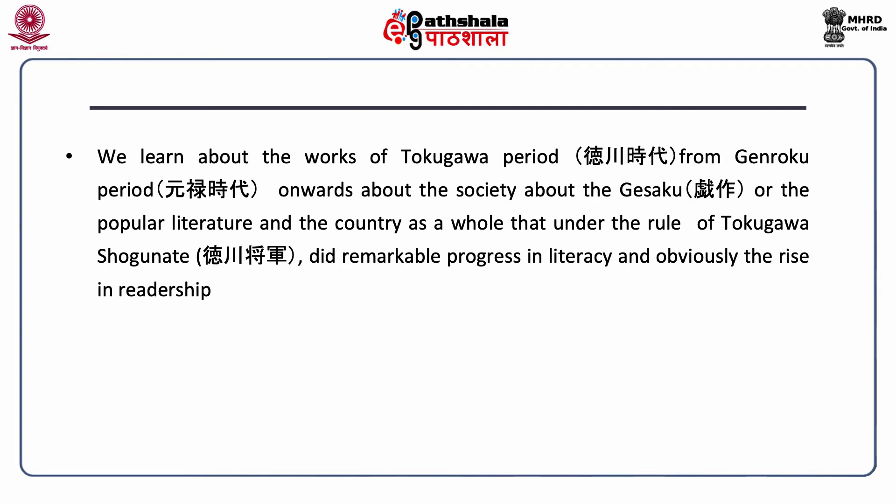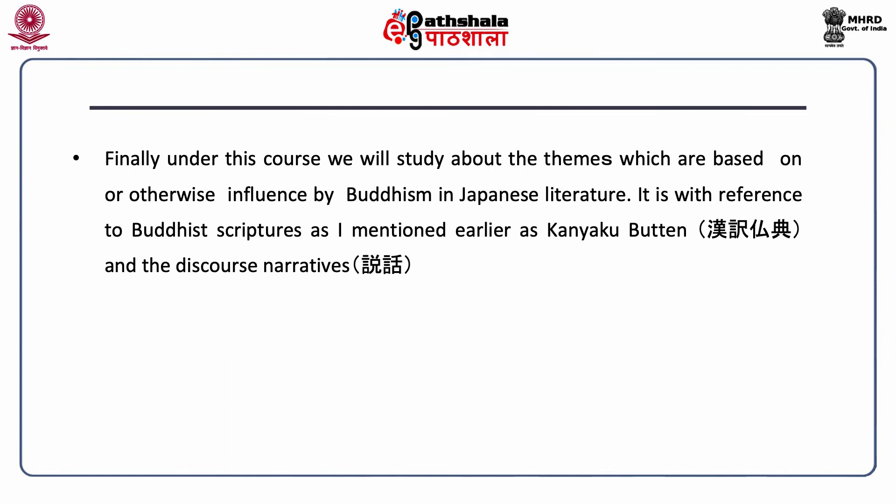In Unit 7, we learn about the works of the Tokugawa period from the Genroku period onwards, about society, about Gesaku or the popular literature, and the country that under the rule of the Tokugawa Shogun made remarkable progress in literacy and saw a growth in readership. Finally, in Unit 8, we will study themes influenced by Buddhism in Japanese literature, with reference to Buddhist scriptures — Kanyaku Butten — and Setsuwa, the discourse narratives.